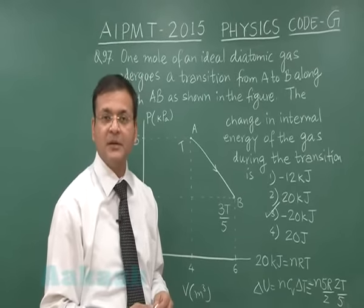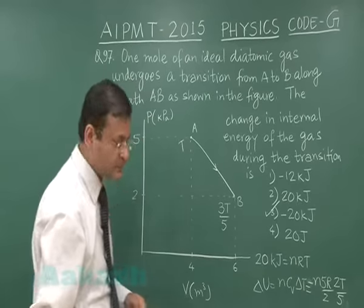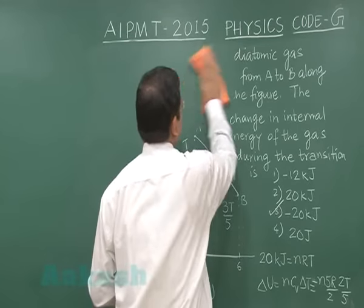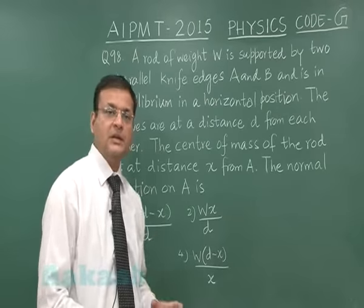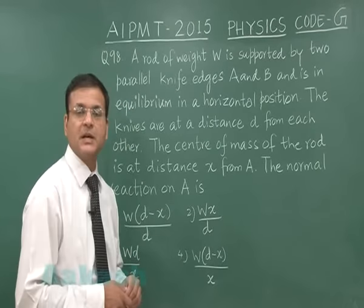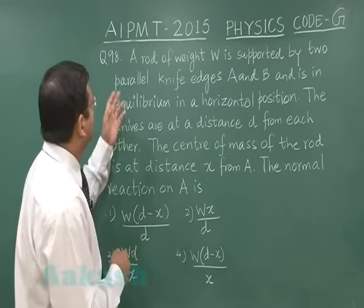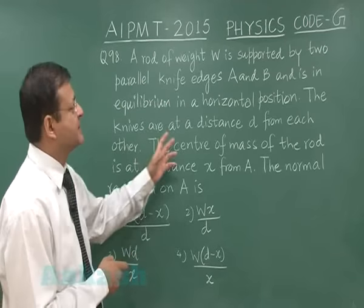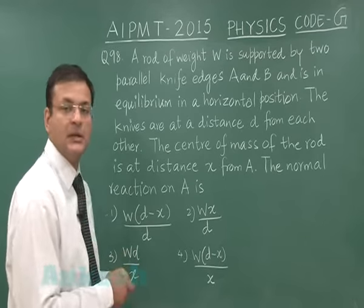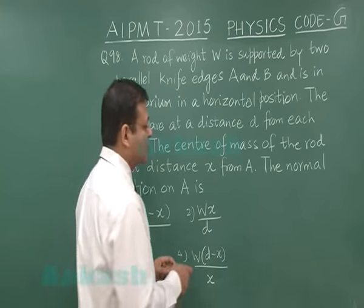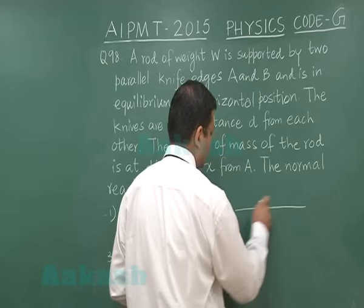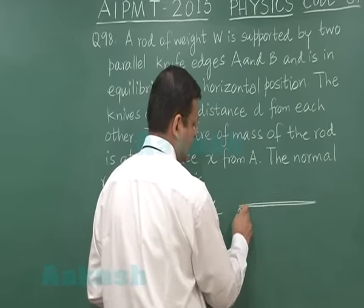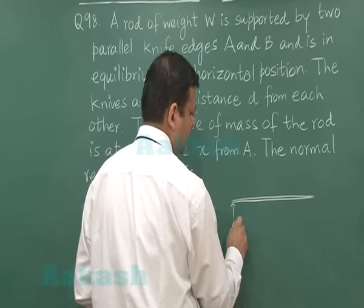Now let us move on to question number 98. Now here in this question 98 which is a question of equilibrium, you have a rod of weight W is supported by 2 parallel knife edges A and B. However the diagram is not given to you in this question but you can draw it something like this. This is the rod and it has been supported by 2 edges that is A and B. A let us suppose is here and B is here.